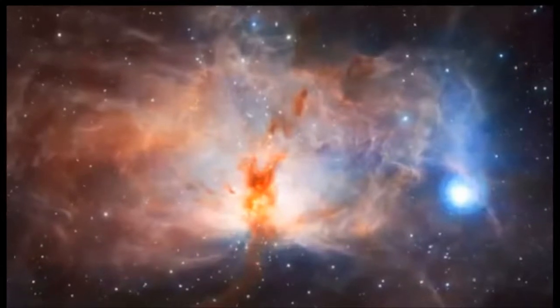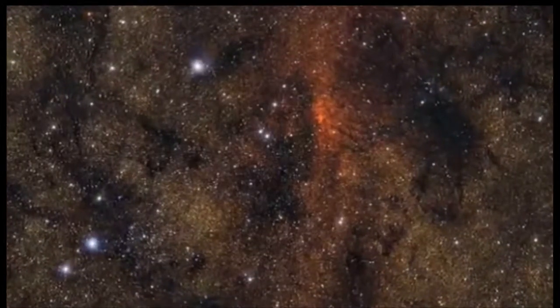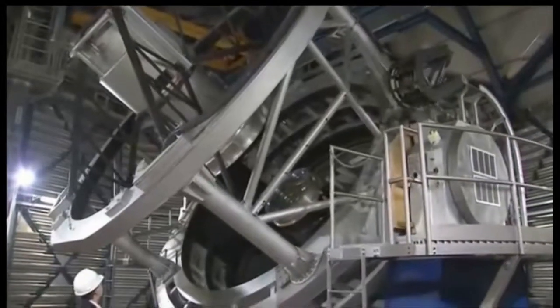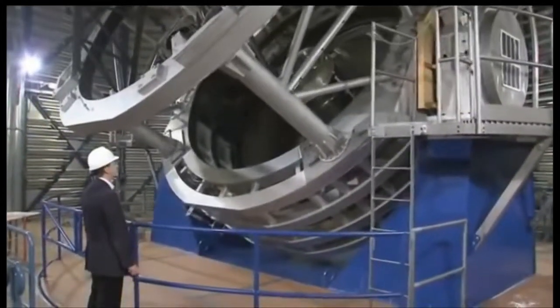A new telescope for mapping the sky is starting work at ESO's Paranal Observatory in Chile and has just released its first images. It's called VISTA, or the Visible and Infrared Survey Telescope for Astronomy, and it's the largest and most powerful infrared survey telescope ever built.